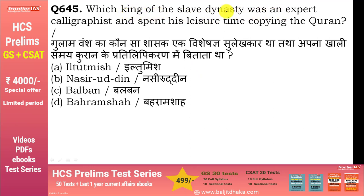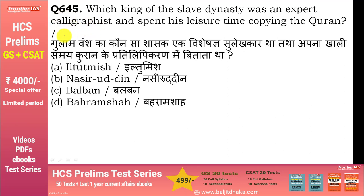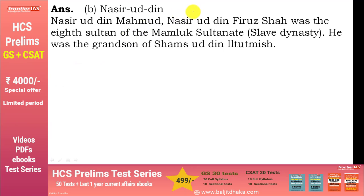Which king of the slave dynasty was an expert calligraphist? Answer है Nasiruddin। Calligraphy art of beautiful handwriting होती है - 'calli' meaning beautiful और 'graphy' meaning handwriting। Cacography का मतलब होता है ugly handwriting। Nasiruddin slave dynasty का 8th sultan था और वो Iltutmish का grandson था।